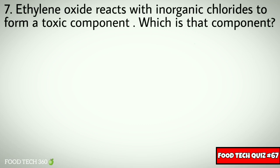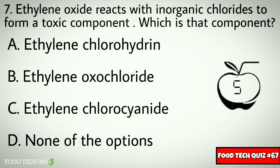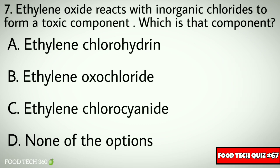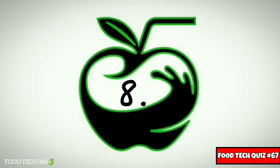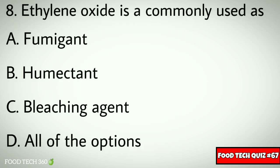Question number seven: ethylene oxide reacts with inorganic chlorides to form a toxic component. Which is that component? Options: A) ethylene chlorohydrin, B) ethylene oxochloride, C) ethylene chlorocyanate, D) none of the options. Correct answer: A) ethylene chlorohydrin.